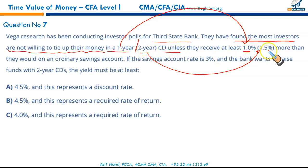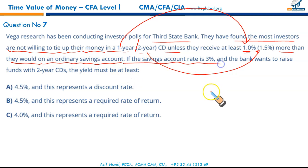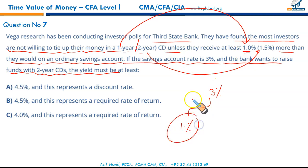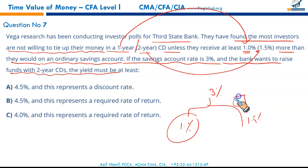For a one-year CD, investors expect at least 1% premium, and for a two-year CD, 1.5% more than they would earn on an ordinary savings account. If the savings account pays 3% and the bank wants to raise funds for a two-year CD, investors would require 3% + 1.5% = 4.5%.